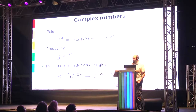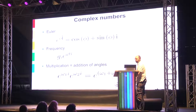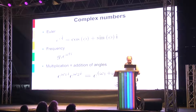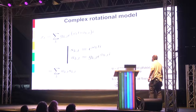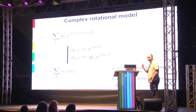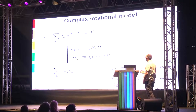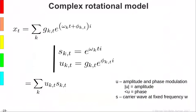The key property we will use is that multiplication of two complex numbers multiplies their amplitudes but adds their angles: e^(omega1·i) × e^(omega2·i) = e^((omega1+omega2)·i). With this in mind, we want to create a complex rotational model instead of a sinusoidal model, expressing x(t) as a summation of complex rotations — we simply replace the sine with e to the power of the original angle.